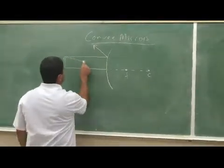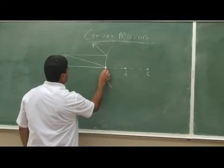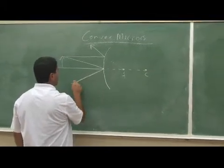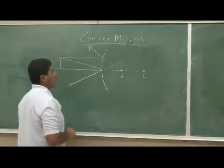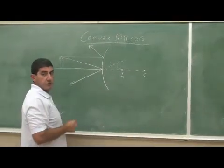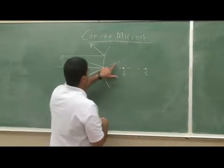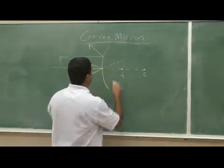And then if you go like this, bounce the middle, it's going to bounce like this. It's going to be seeming to come from here. So where does the mirror form an image? Well, the light rays seem to be emanating from this point.